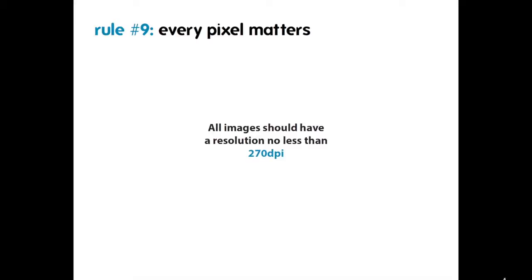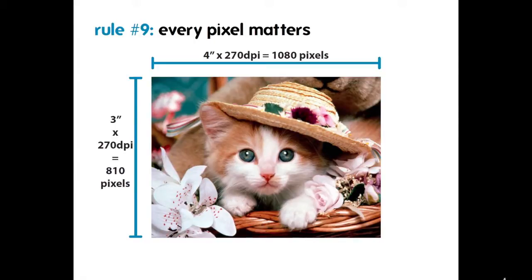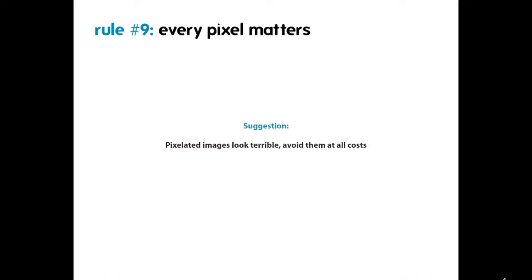As a rule of thumb, all images should have a resolution no less than 270 DPI — that means dots per inch. To determine how big your image needs to be for proper resolution, just take the dimensions and multiply them by 270. For example, if the kitten photo was printed 3 inches by 4 inches, then 4 inches times 270 DPI gives you 1,080 pixels, and 3 inches times 270 DPI gives you 810 pixels. So you would need at least 1,080 by 810 pixels for a 3-inch by 4-inch print. Pixelated images look terrible — avoid them at all costs.